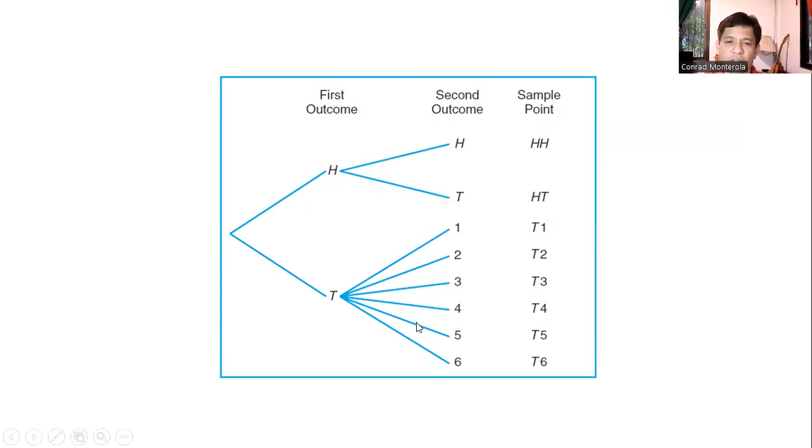So here's the illustration of the said experiment. The first outcome is either head or tail. So if you have head, the second outcome would possibly be head or tail too. So you have HH or HT. If you have a tail, so the possible second outcome would be either 1, 2, 3, 4, 5, 6. So you have T1, T2, T3, T4, T5, or T6.